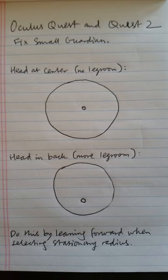One good thing is that when you switch to stationary guardian, it still remembers your room scale guardian, so you won't have to draw it out again. However, one problem with the stationary guardian is there doesn't seem to be a way to adjust its size — it's just one fixed-size circle. A problem I had was when using the stationary guardian, leaning back on the couch would cause the grid to show up, as if I'm about to go outside my boundaries.